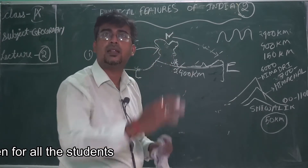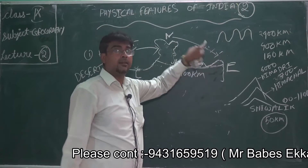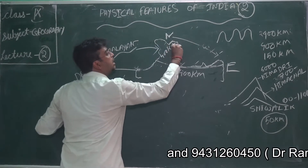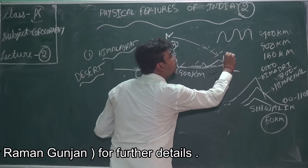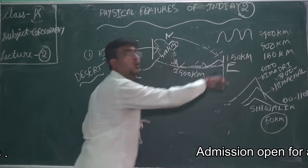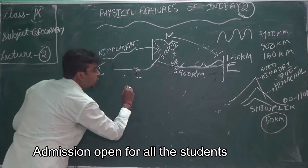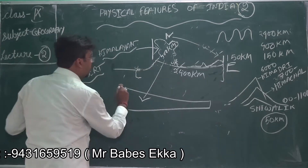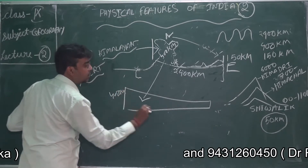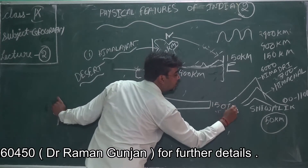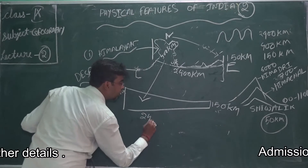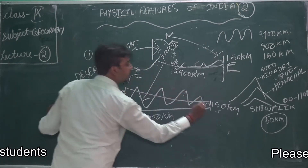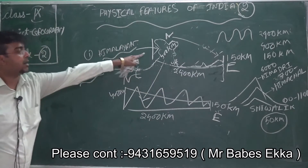The total length of the Himalayas is 2400 km. In Jammu Kashmir the width is about 400 km wide, but in the Arunachal Pradesh area it is about 150 km wide. So it looks wider in the west and narrower in the east — 400 km wide, 150 km wide, and 2400 km in length — that is the Himalayas.